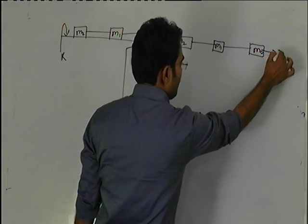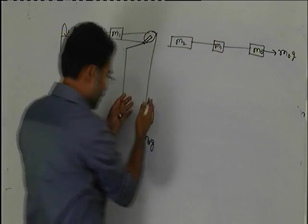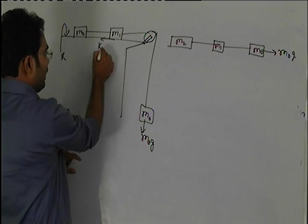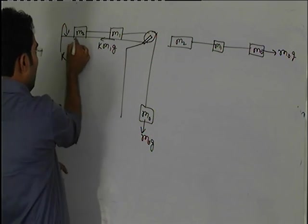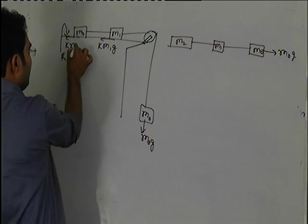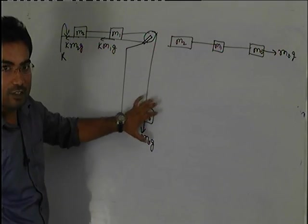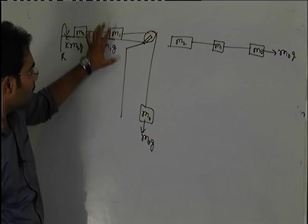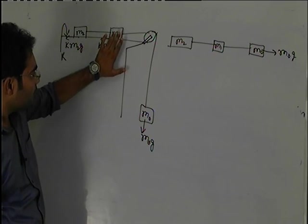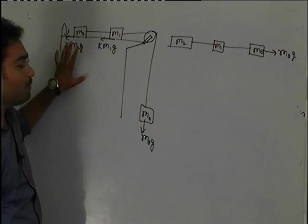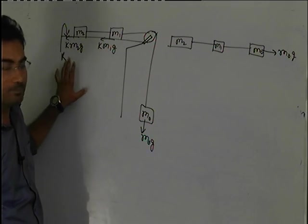M0 mass and the friction forces together. This is M1 friction force KM1G, M2 friction force KM2G.